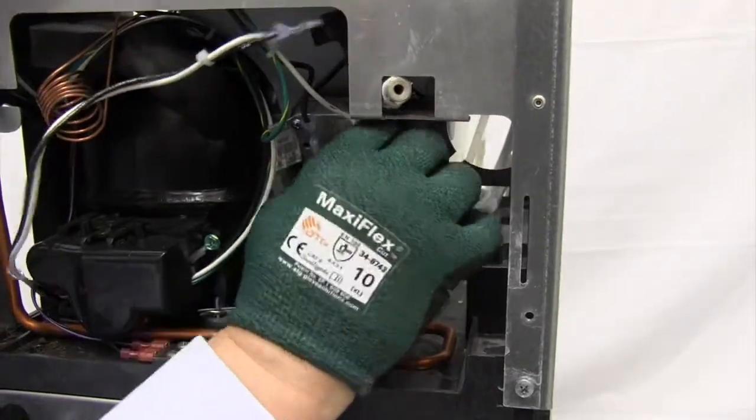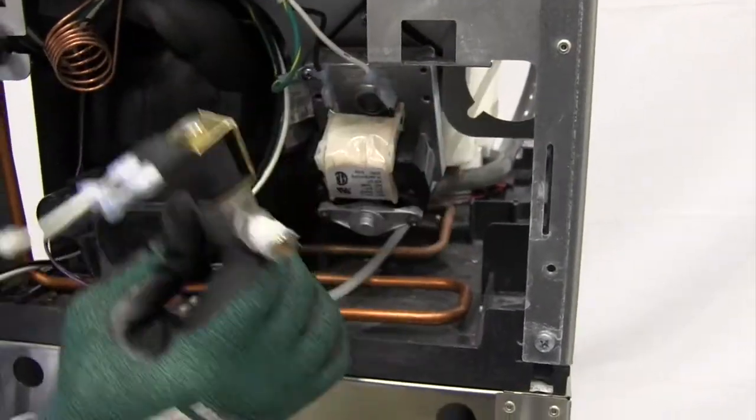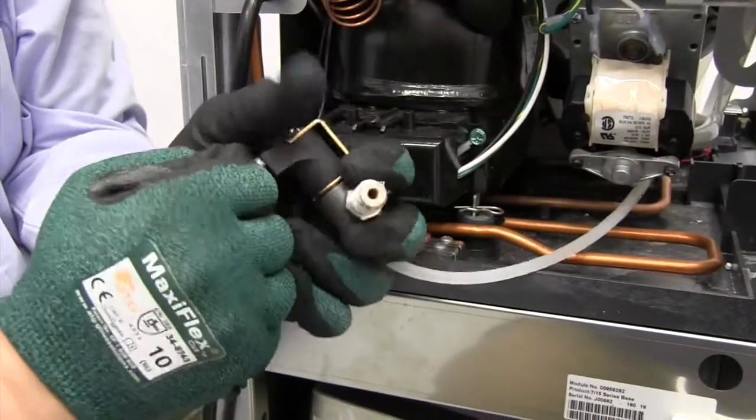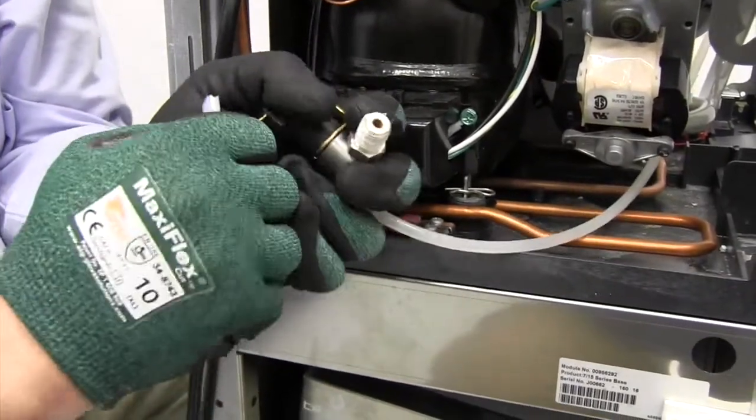With the screws removed, the solenoid will just back out of the bracket, and you'll gain access to it from the rear of the machine. And then we can disconnect the wire connections and the John Guest water fitting.